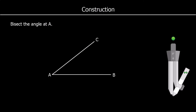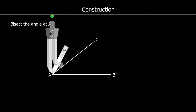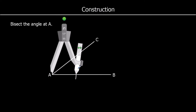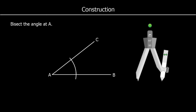This question says bisect the angle at A. Bisect means split in half, so we need to split this angle exactly in half — halfway between the angle. I'm going to place the point of my compass exactly at A and find two points, one on each arm of the angle, exactly the same distance away from A.